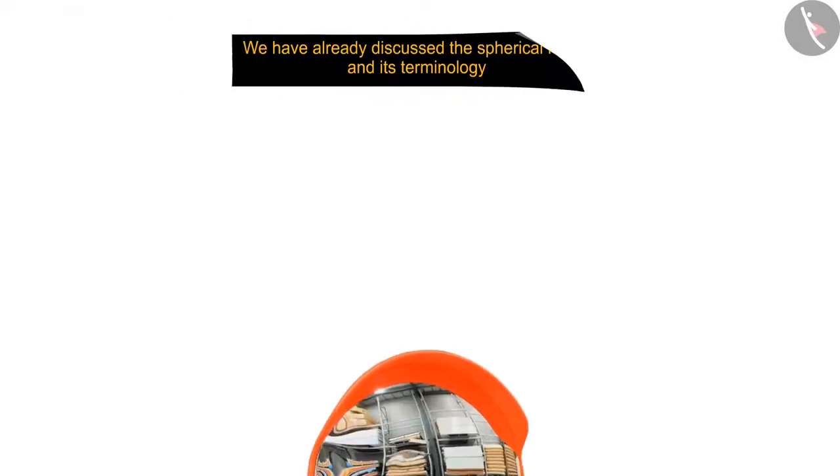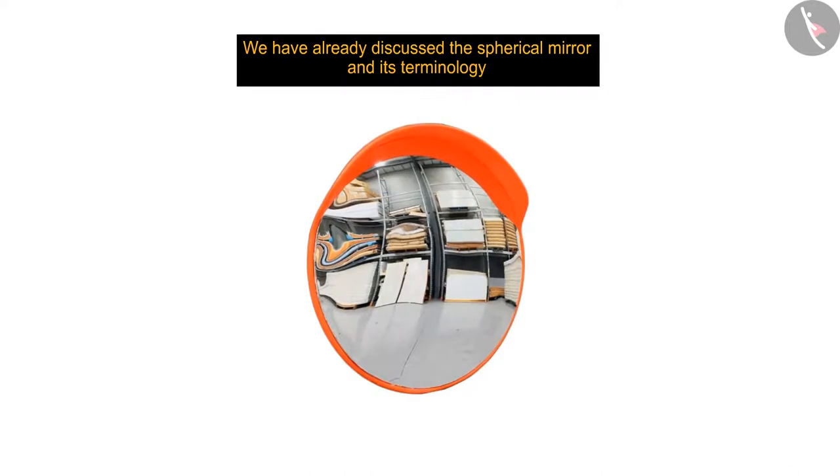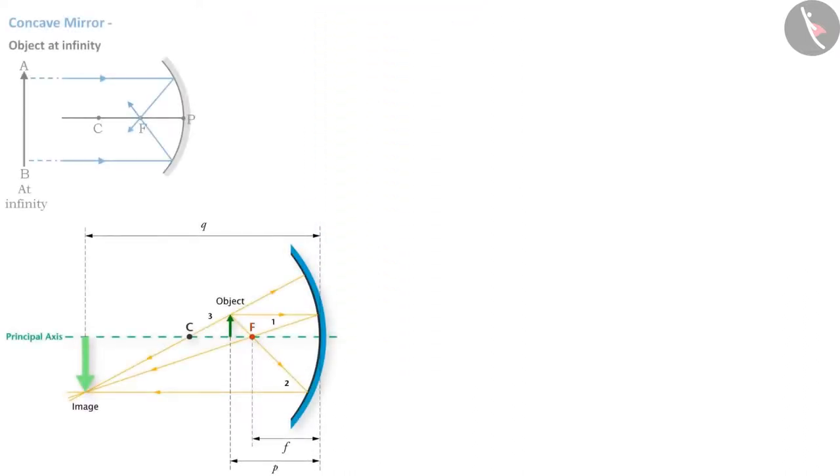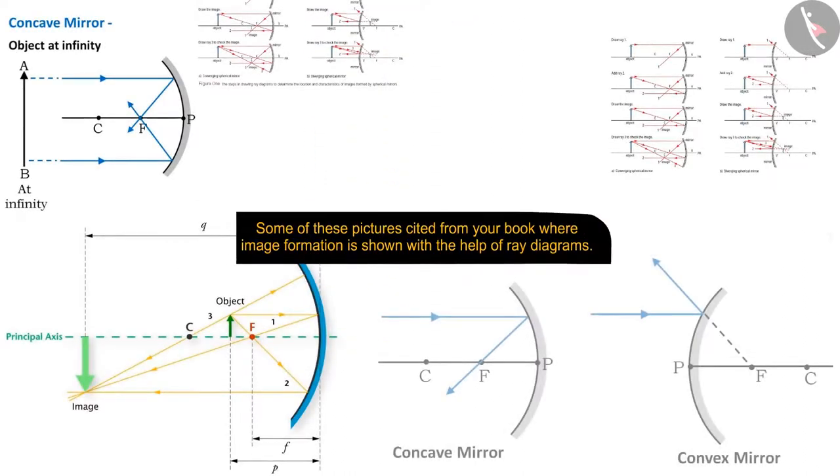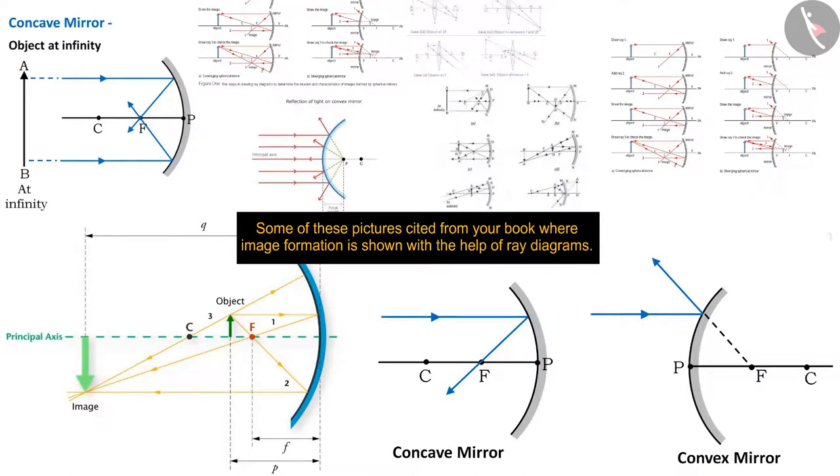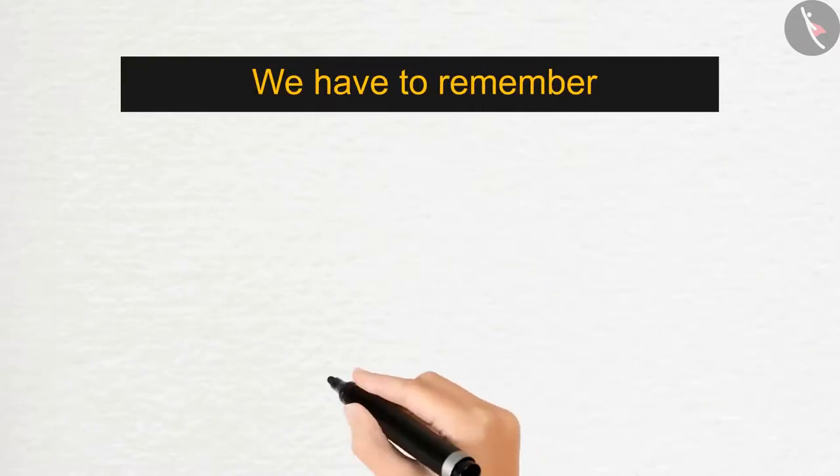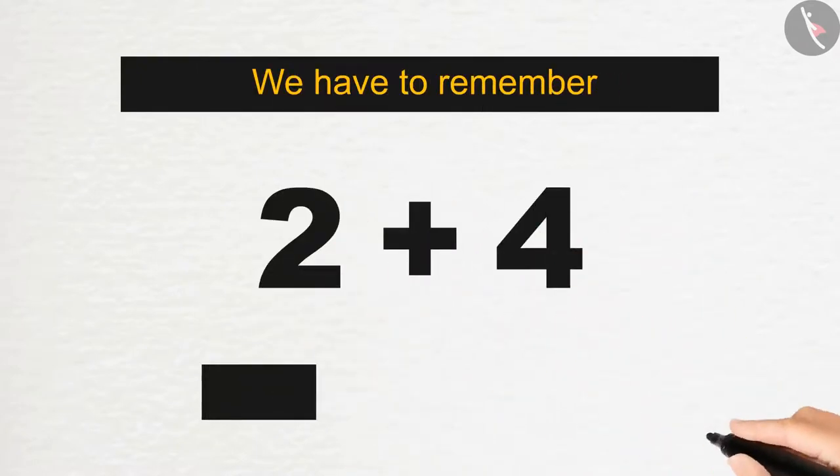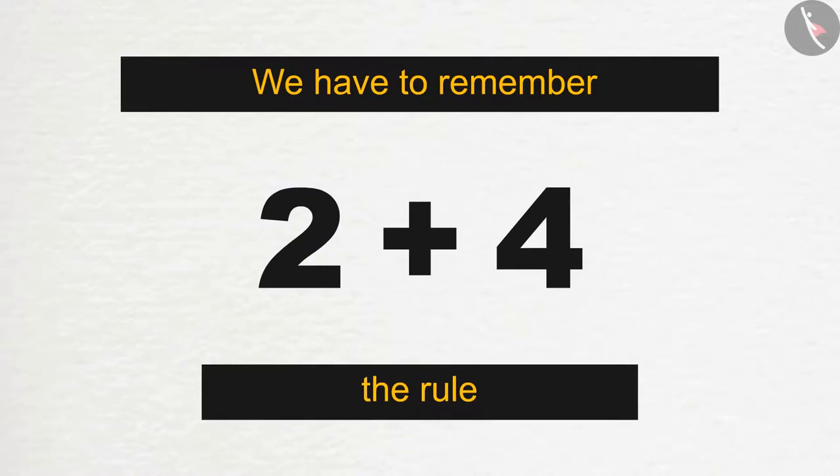Let's move forward. We have already discussed the spherical mirror and its terminology. Today we will discuss representation of images formed by mirrors and the cases of convex mirrors. You must be familiar with some of these pictures cited from your book where image formation is shown with the help of ray diagrams. To understand these diagrams, we have to remember the rule of 2 plus 4, where 2 is the number of rays and 4 is the number of cases. To make any ray diagram, we need 2 rays of light which could be taken from any of these 4 cases.